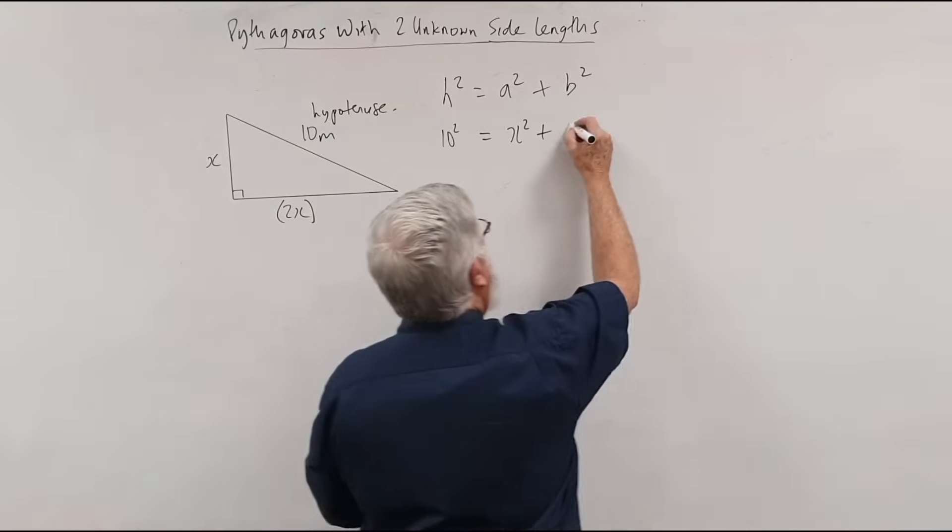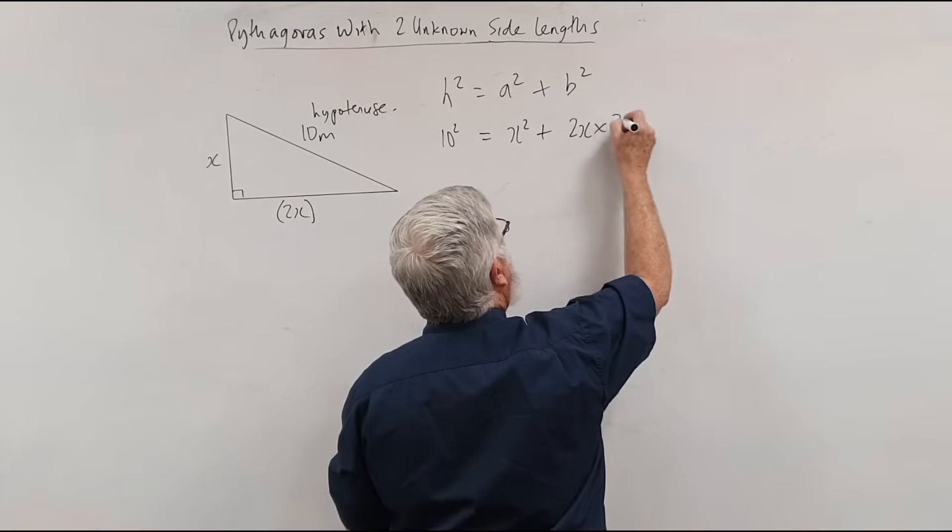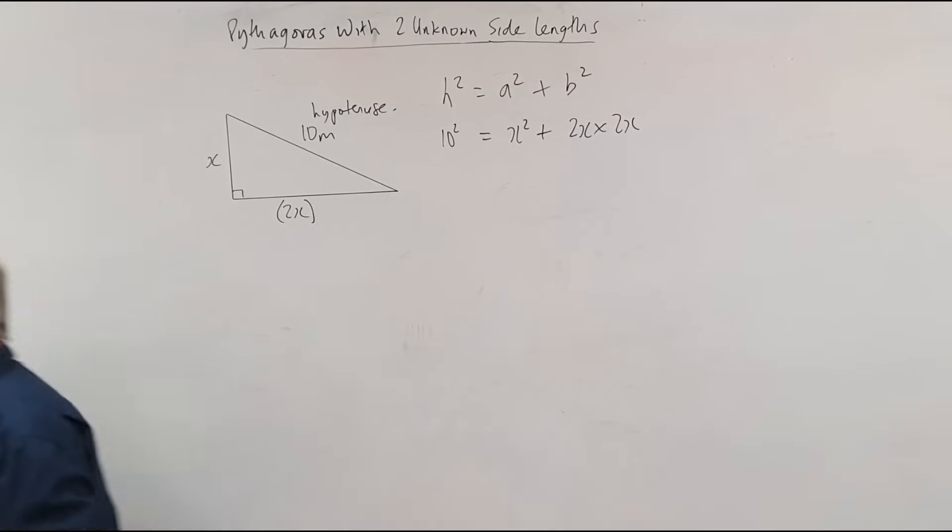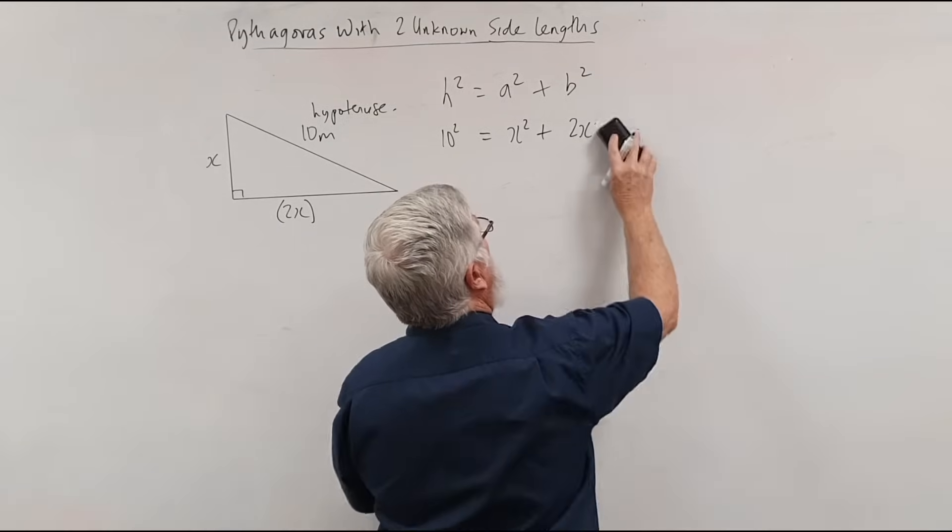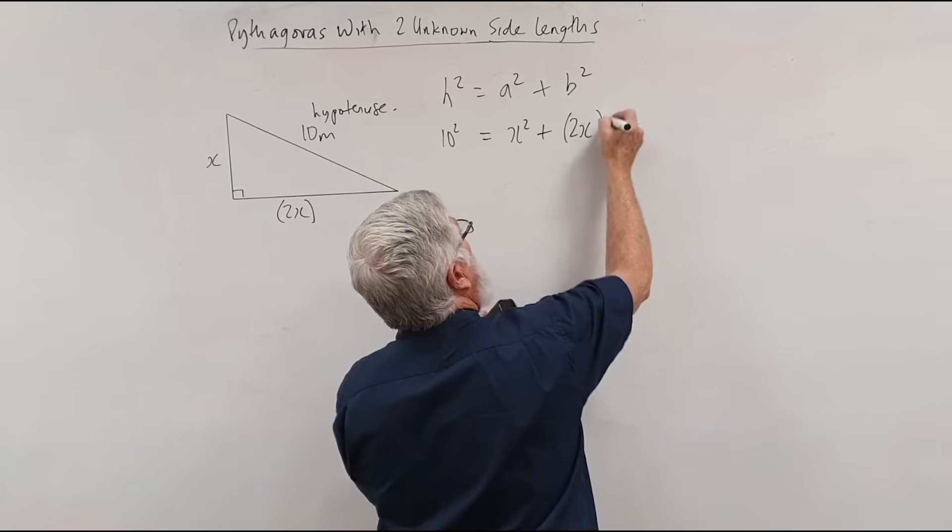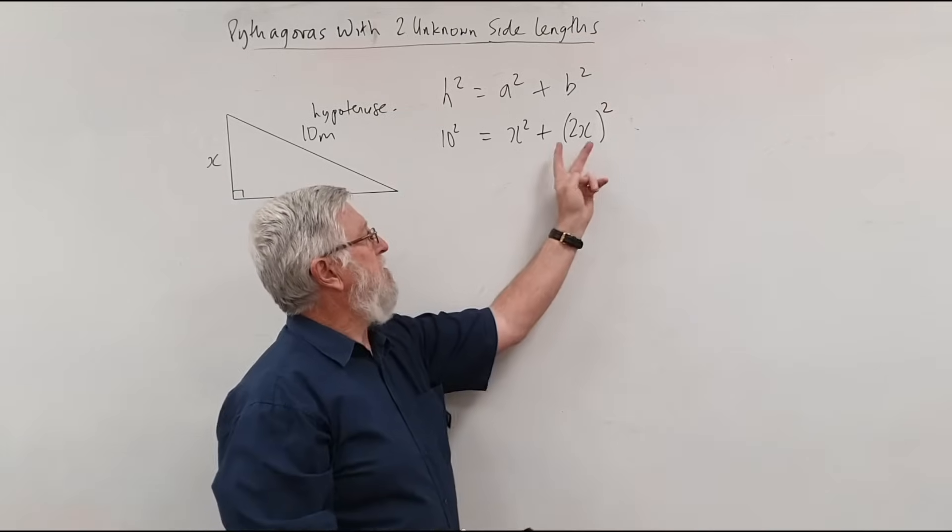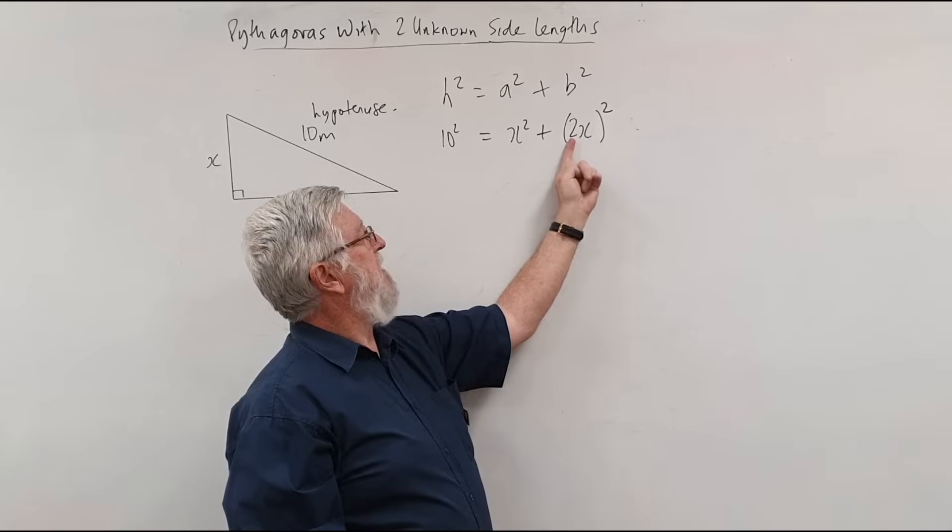It's almost like there's a bracket around that. So when I go over to here, if I wanted to I could write 2x times 2x, but what most mathematicians do, they don't write 2x times 2x. They put a bracket around all of it and put a square.